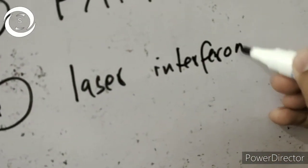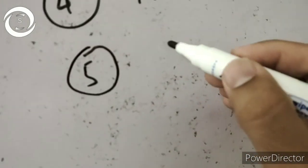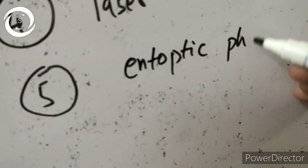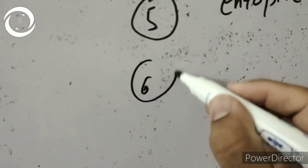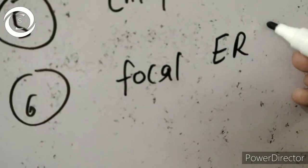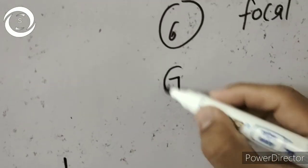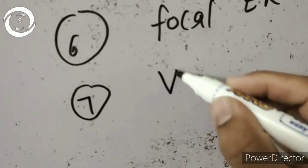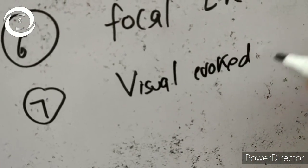The macular functions in hazy media include: Maddox rod, two-point discrimination, potential acuity meter (PAM) testing, laser interferometry, entoptic phenomena, focal electroretinogram (ERG), visual evoked potentials, and B-scan. These can all tell you about the macula even in a hazy media.